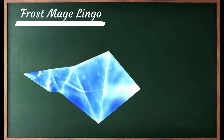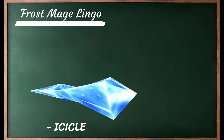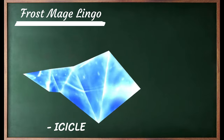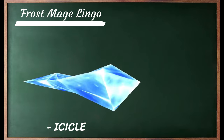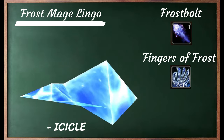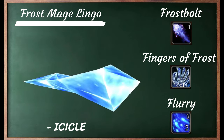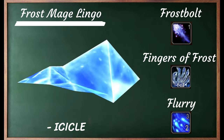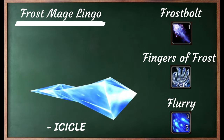Finally, this is an icicle — they float over your head and you get them by casting Frostbolt, Fingers of Frost, or Flurry. Now let's go visit one of our wooden training dummies and learn more about single target and AoE.